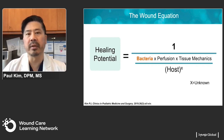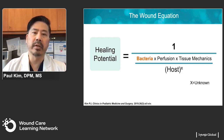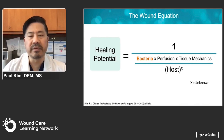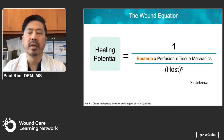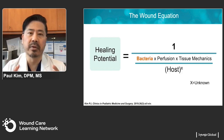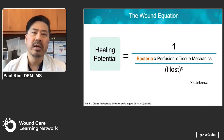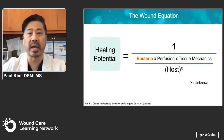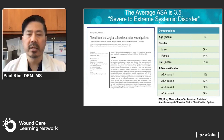Whenever I'm faced with a patient for the first time or as a consultation, I think about their healing potential — the wound equation — where bacteria, perfusion, and tissue mechanics are in the denominator. The driving factor of healing potential is the host, defined by multiple variables including their comorbidity profile, health disparities, genomic profile, access to healthcare, and nutritional status. It's not just a simple pH or infection issue; it's largely driven by the innate ability for the patient to heal.